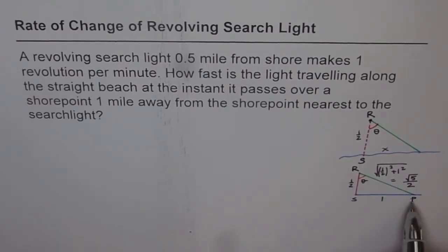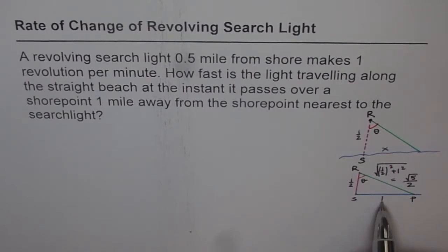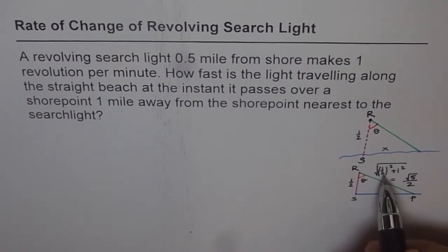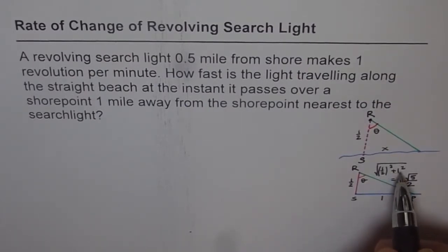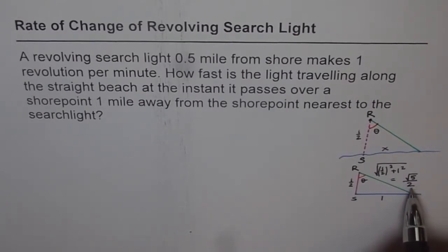In this particular triangle, as you can see, it is a right triangle. The hypotenuse is the square root of (1/2)² + 1², which equals √(1/4 + 1). Taking a common denominator of 4 gives √(5/4), which simplifies to √5 over 2. That is how we get this value.